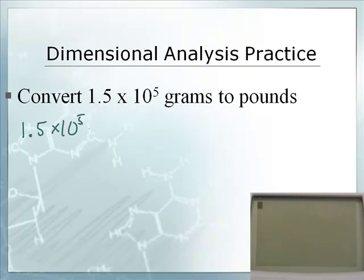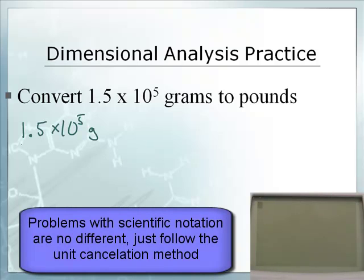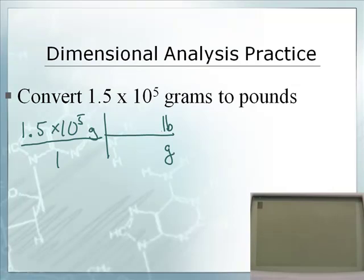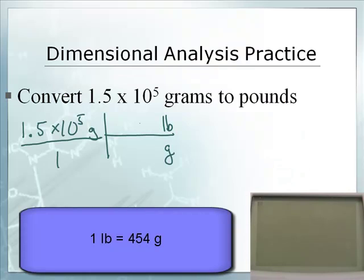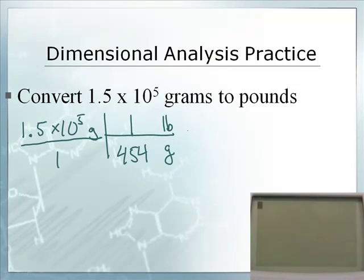1.5 times 10 to the 5th, g, that's the unit for grams. I'm going to go back to my chart here. Grams to pounds, here it is right here. One pound is 454 grams. 454 grams is one. A gram weighs just a tiny amount.